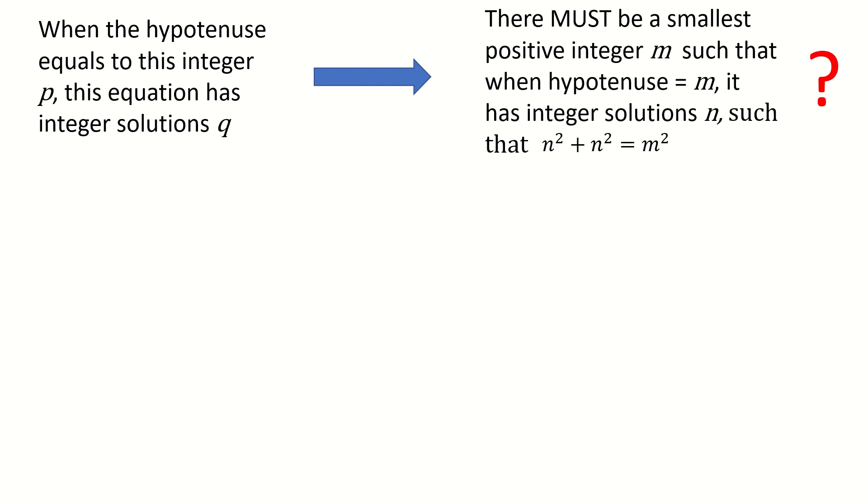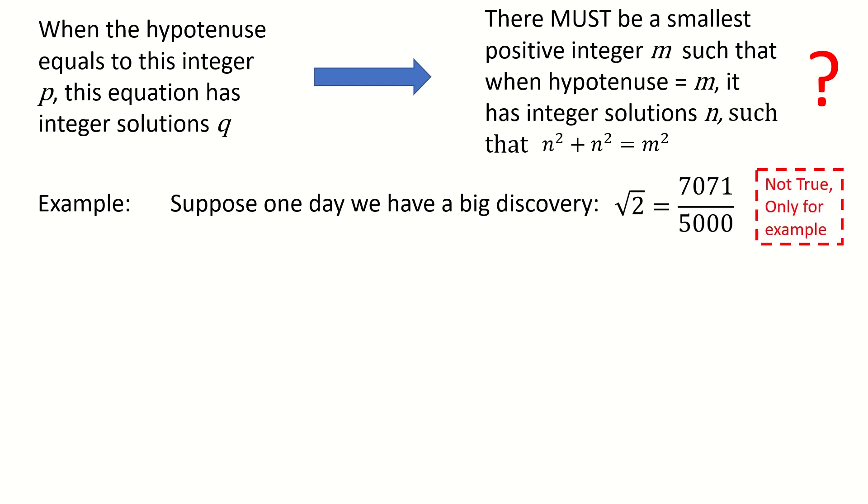Let's see an example to help us better understand this step. Suppose one day we have a big discovery—say √2 equals 7071 divided by 5000. Surely this is not true, only for an example.